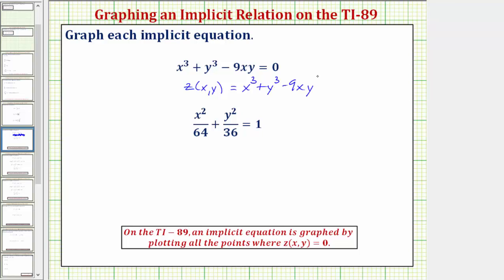Looking at the second equation, if we set this equal to zero, we would subtract one on both sides, and therefore to graph this second equation, we'll be entering z of x comma y equals x squared divided by 64 plus y squared divided by 36 minus one.